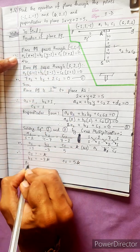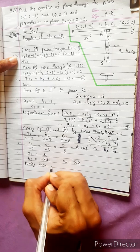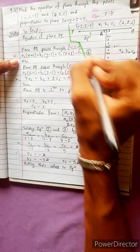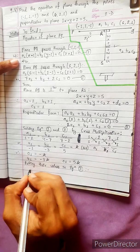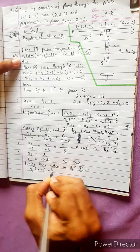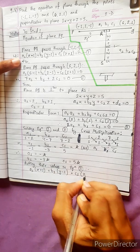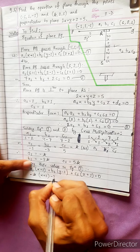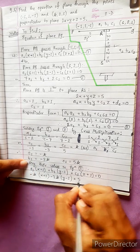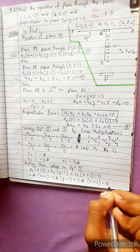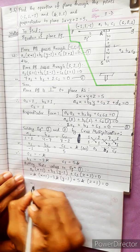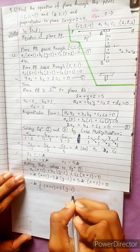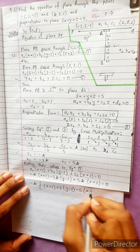Now putting the values into equation 3. With A1 equals minus K, B1 equals minus 3K, and C1 equals 5K, substituting into the plane equation through point (1, 1, −1): minus K times (x plus 1) plus minus 3K times (y minus 1) plus 5K times (z plus 1) equals zero.